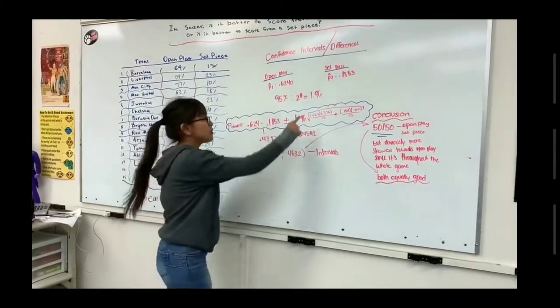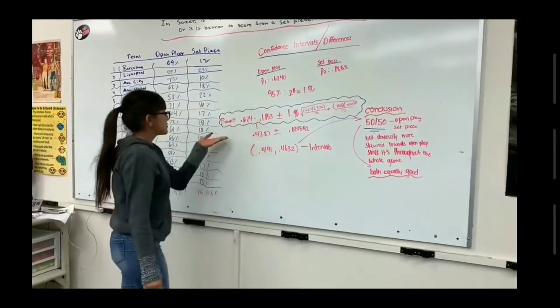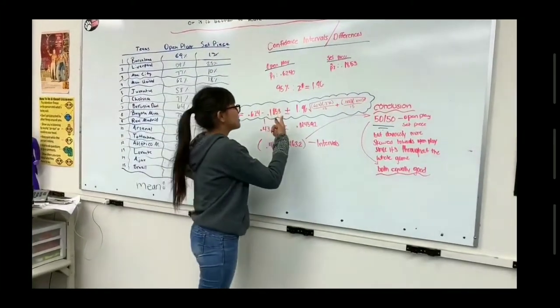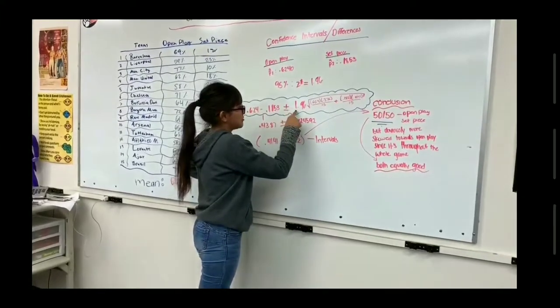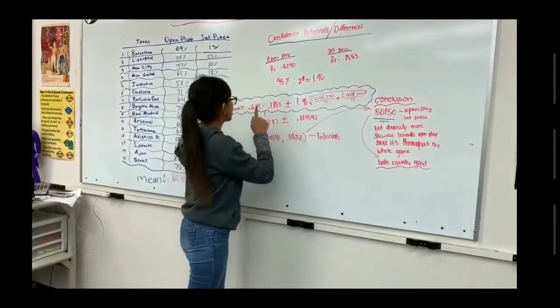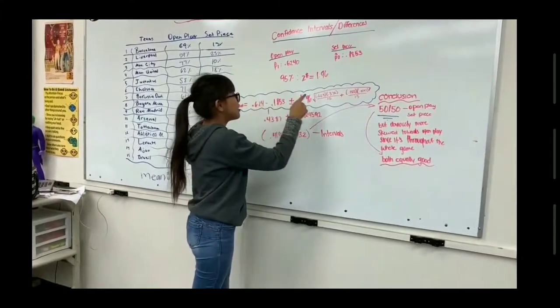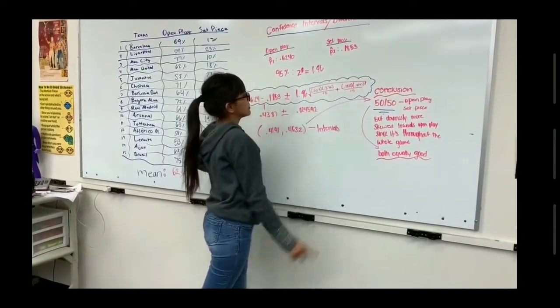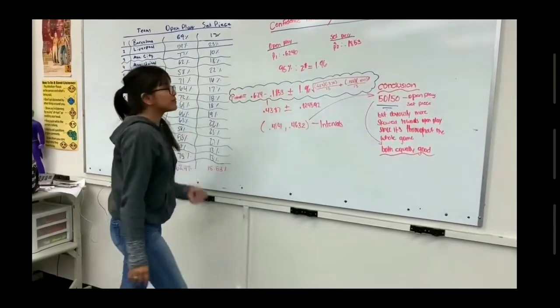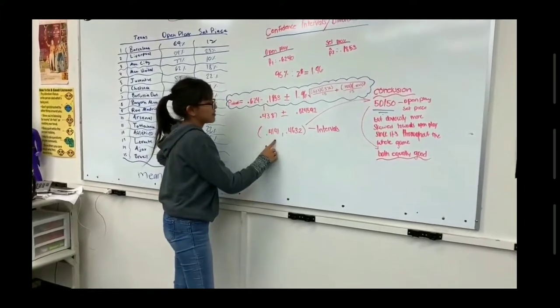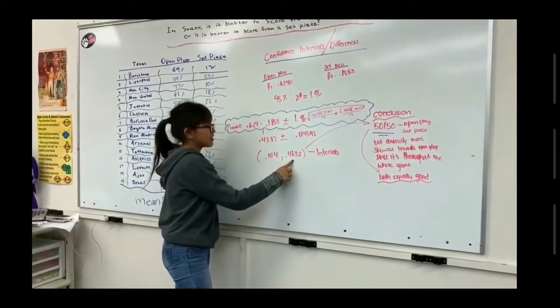And we're going to use this equation, which is basically the difference between the two means plus and minus the z-score and the square root of the complement of the p-hats for both over 15, which is the sample size. And that would give us 0.4141 and 0.4632.